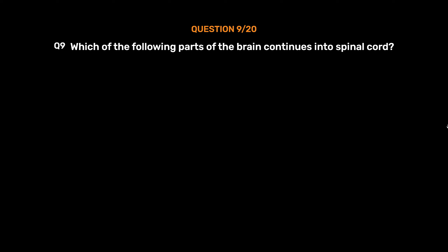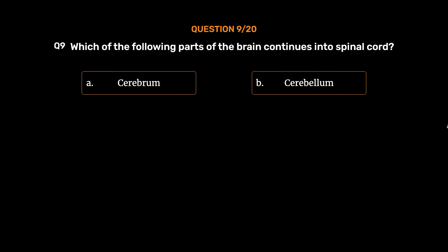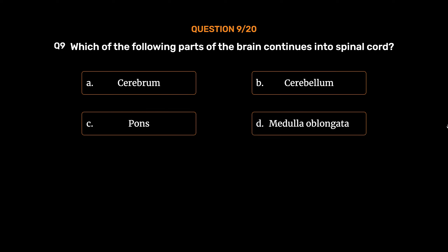Question number 9. Which of the following parts of the brain continues into spinal cord? The correct answer is Option D: Medulla oblongata.